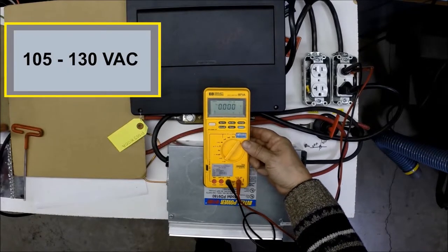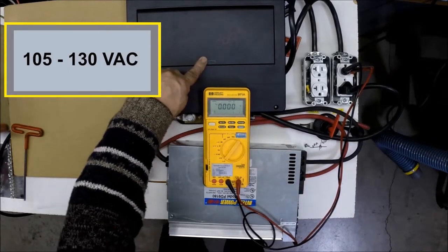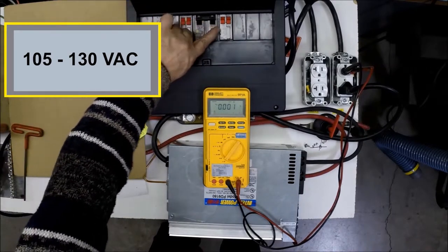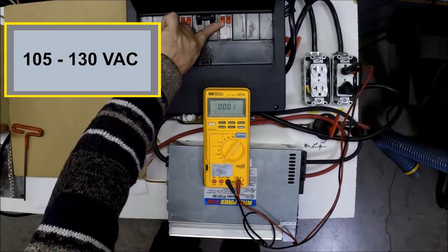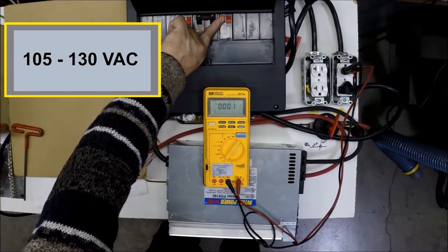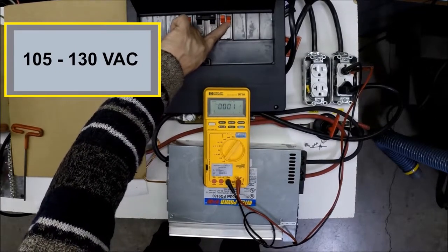There is no power at the outlet. We are now going to check the fuse panel. There should be a breaker for the converter. Sometimes there are other things on this breaker. We flip it up to turn the breaker on, and we still do not have power at the outlet.